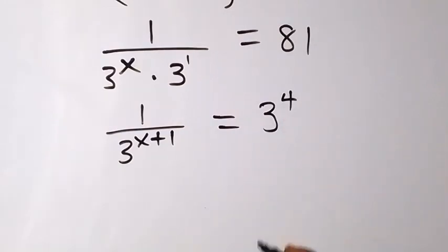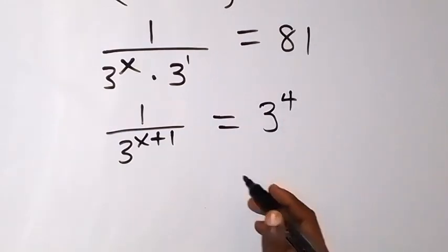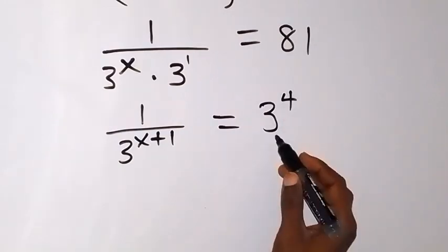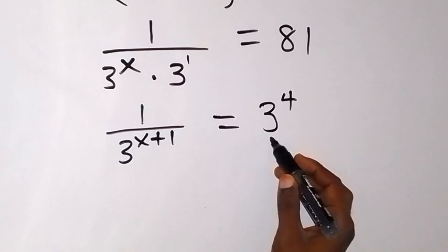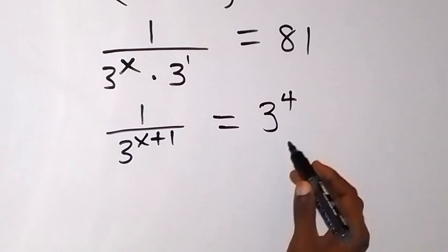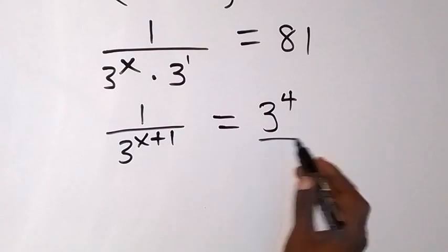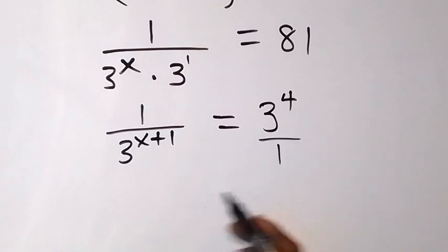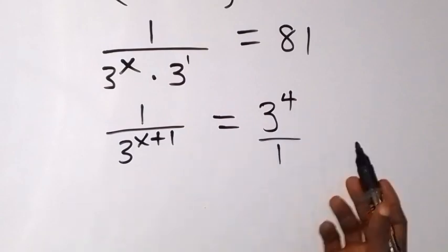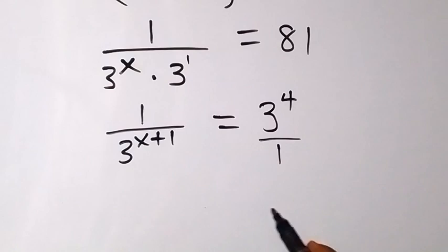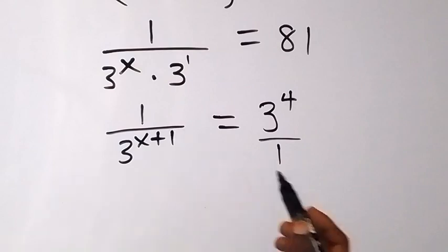So 3 raised to power 4 is the same thing as 81. Then this is like we have 3 raised to power 4 over 1. So we have these fractions, and we can cross multiply.